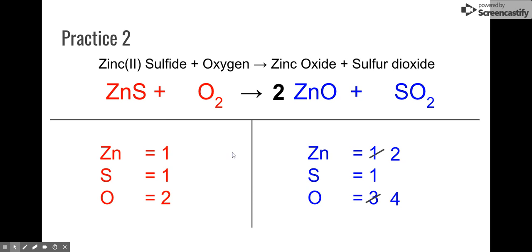Sometimes when you balance things, some things become unbalanced. So I'm going to put a two in front of the zinc over here, which also happens to change my sulfur. Again, sometimes when you balance things, other things become unbalanced. So I got to go change the sulfur over here, which changes my oxygens and my sulfur.